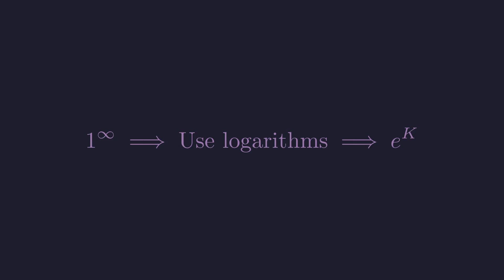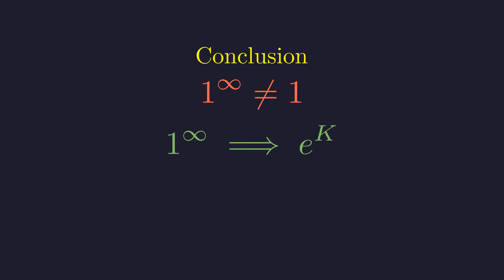So here's the complete picture. When we encounter one to the power of infinity, we take logarithms to convert the problem into a manageable form, then exponentiate to get e to the power of k. Let's crystallize the key insight. One to the power of infinity isn't necessarily one. It's an indeterminate form that resolves to a power of e with the specific power determined by the functions involved. The value of k depends on how quickly the base approaches one and how quickly the exponent grows. It's this delicate balance that determines our final answer, a beautiful and counterintuitive result that highlights the subtle power of calculus.